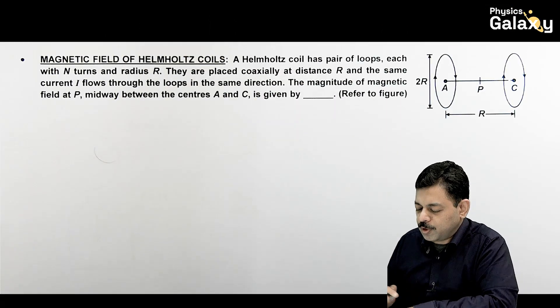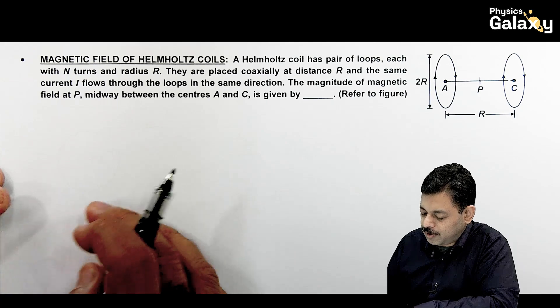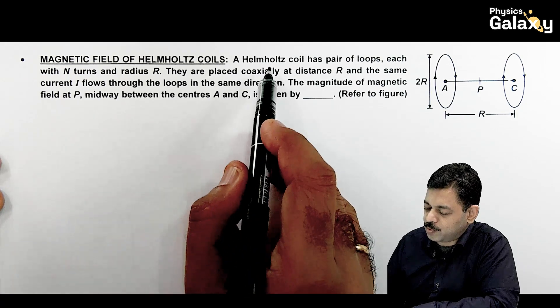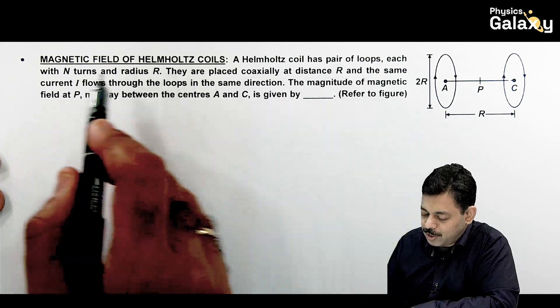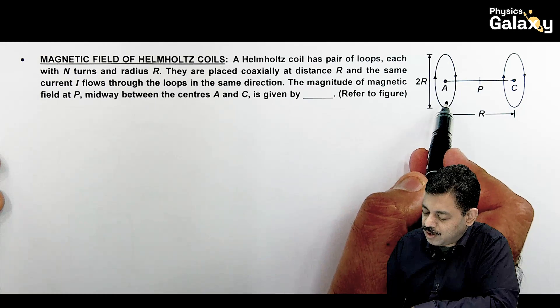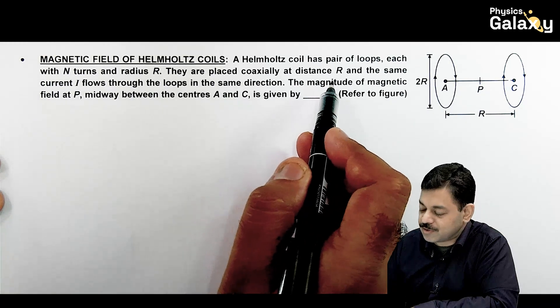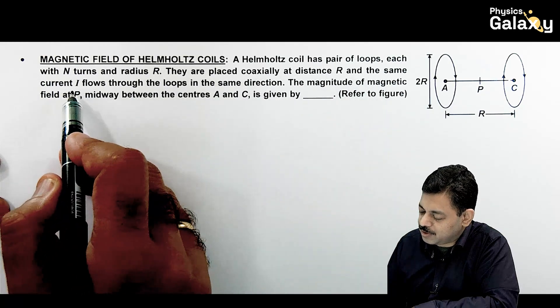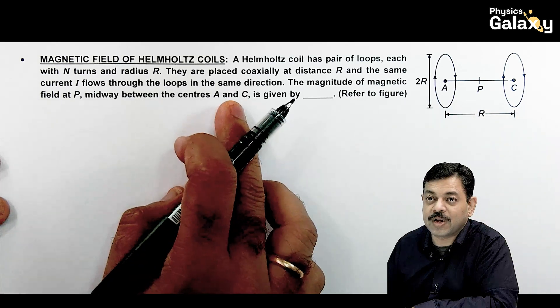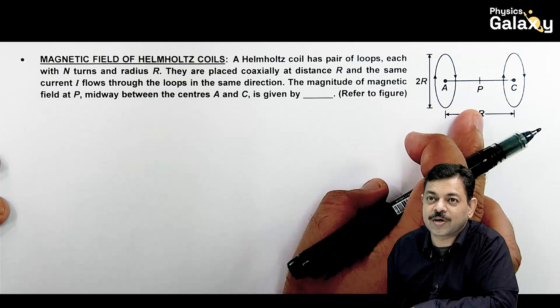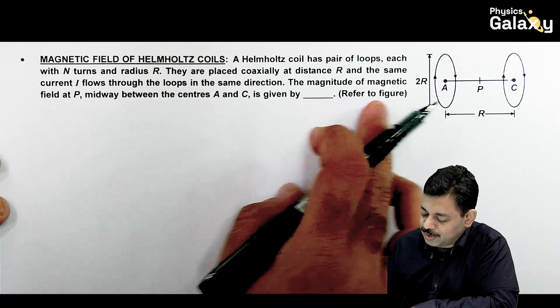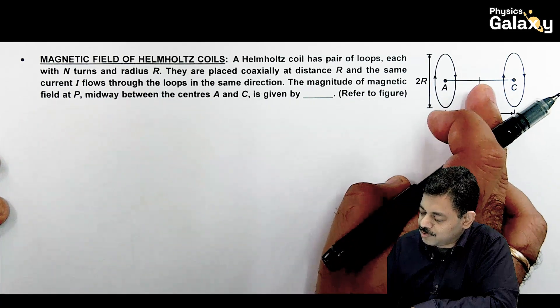Another case here is magnetic field of Helmholtz coils. A Helmholtz coil has a pair of loops each with n turns of radius r. They are placed coaxially at a distance r from each other. The same current i flows through the loops in the same direction, meaning both coils produce magnetic field in same direction. We need to calculate magnitude of magnetic field at P, midway between the centers.